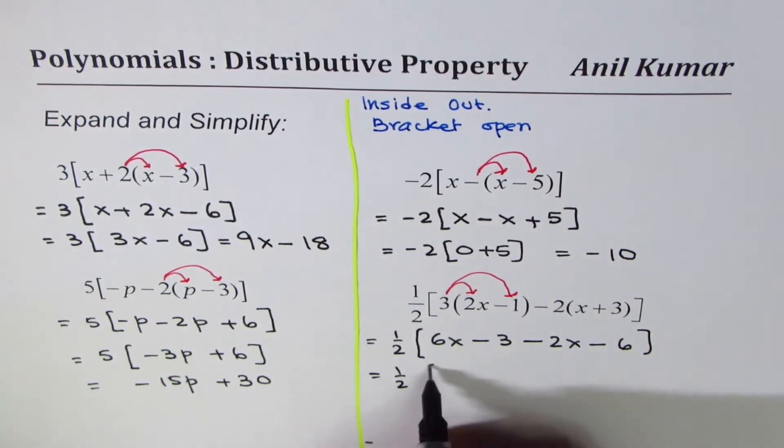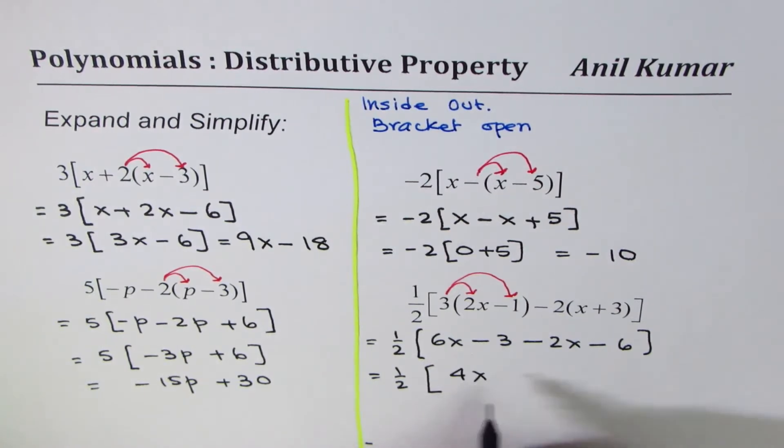Now we can combine the like terms: 6x minus 2x is 4x, minus 3 minus 6 gives us minus 9. And we'll multiply each by half: half times 4 is 2x, minus 9 by 2, so you can write this as 4.5.